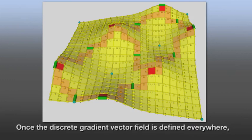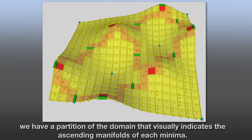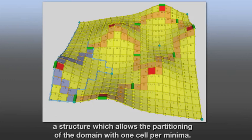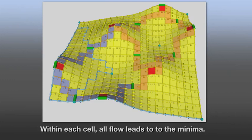Once the discrete gradient vector field is defined everywhere, we have a partition of the domain that visually indicates the ascending manifolds of each minima. Taken as a complex, these arcs partition the domain into the Morse-Smale complex, a structure which allows the partitioning of the domain with one cell per minima. Within each cell, all flow leads to the minima.